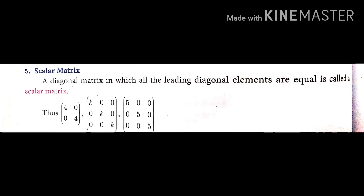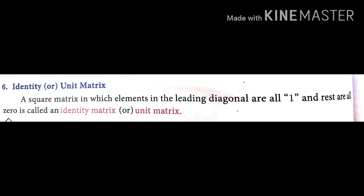The sixth type is the unit matrix or identity matrix — a square matrix in which all elements in the leading diagonal are 1 and the rest are 0. For example, I₂ = [1, 0; 0, 1]. The leading diagonal is all 1s and the rest are all 0s. This is called the identity matrix or unit matrix.